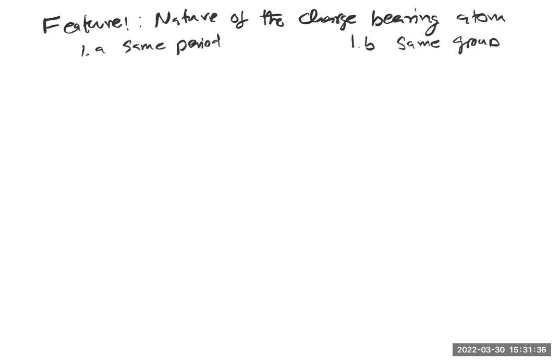If the atoms are in the same period, then electronegativity determines the more stable conjugate base or more stable anion. If they are in the same group, the size of the atom that bears the charge determines the stability of that anion. So: electronegativity determines stability for the same period, and size determines the relative stability of the conjugate base for the same group.